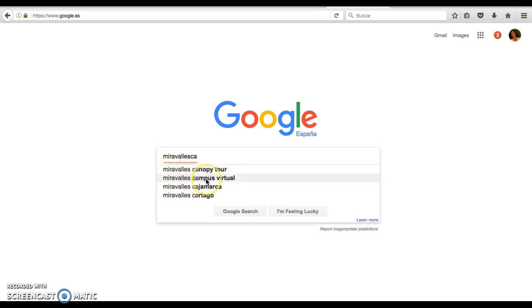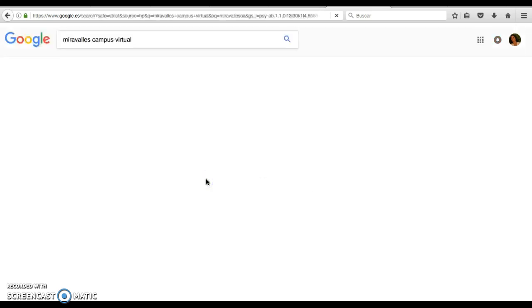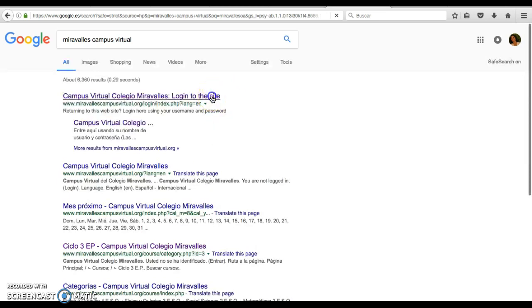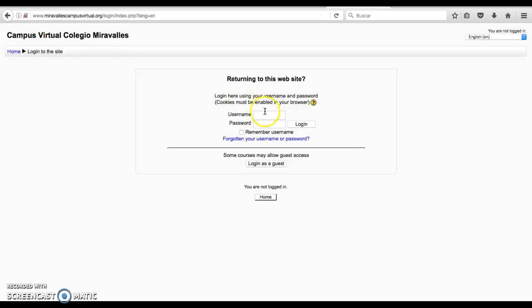You only have to write Miravalles Campus Virtual, and then login. If you write the name we gave you, remember no capital letters, no accent and no spaces, and then the password we gave you. Be careful with capitals again and even at, arroba.